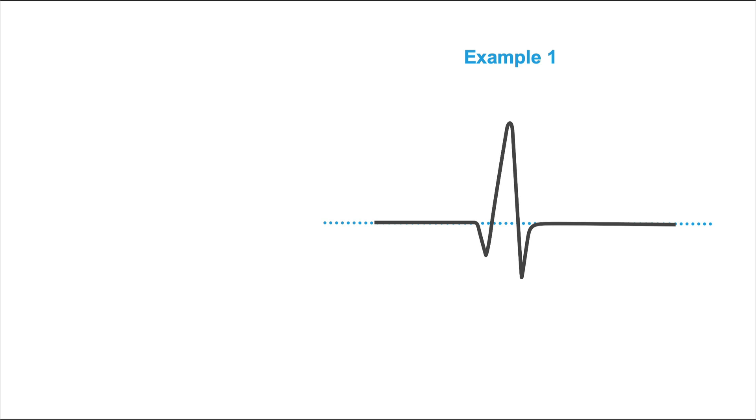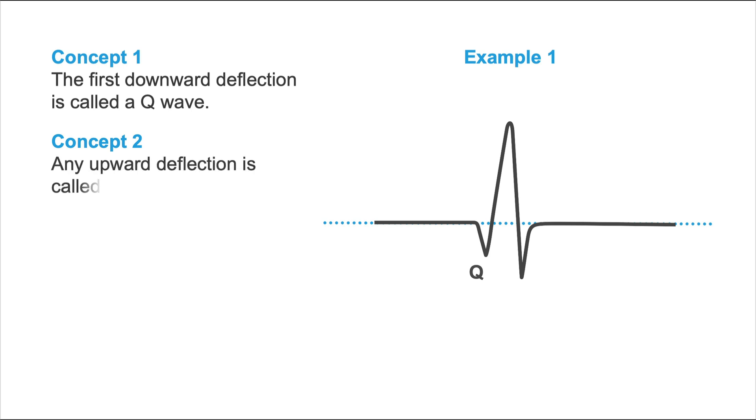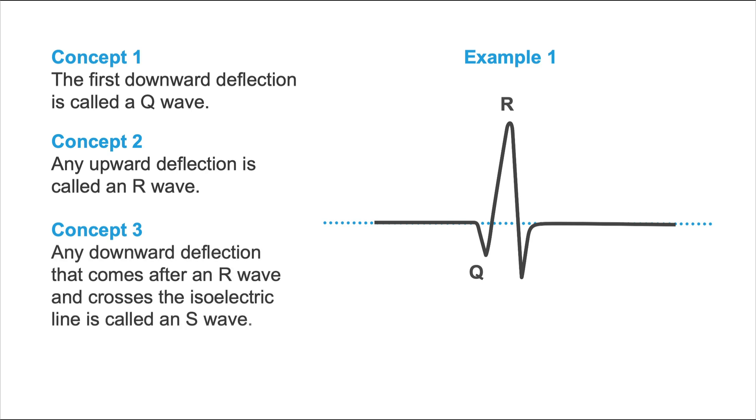That's it. Now let's look at a couple of examples. Example number one: here we have a rather classical case. According to concept number one, the first downward deflection is called a Q-wave. According to concept number two, any upward deflection is called an R-wave. And concept number three says any downward deflection that comes after an R-wave is called an S-wave. So we have a QRS pattern here.